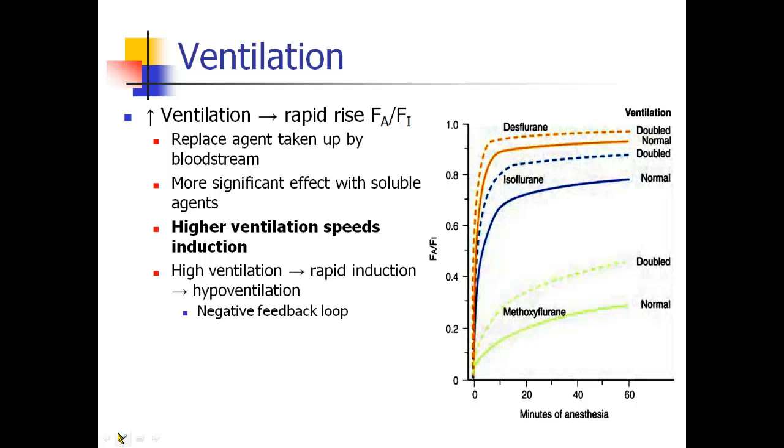When you increase ventilation, what you actually do is you make FA over FI go up more quickly. So actually, when you increase ventilation, you increase induction. And the reason this happens is because you're replacing the agent that's been taken up by the bloodstream. So the faster you breathe, the faster you replenish the agent that's coming from the anesthesia machine back into the lungs.